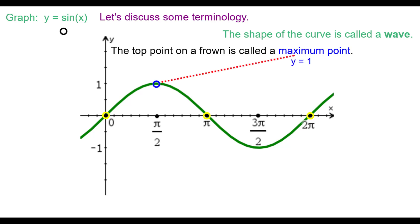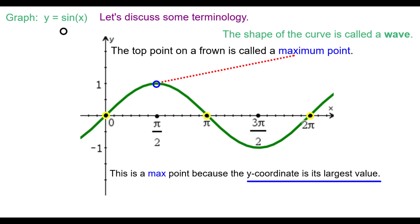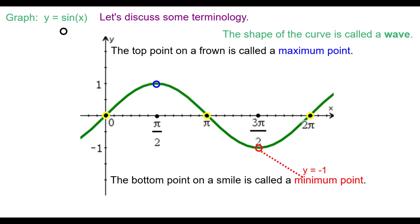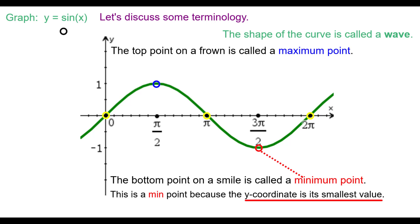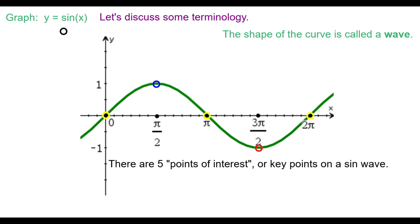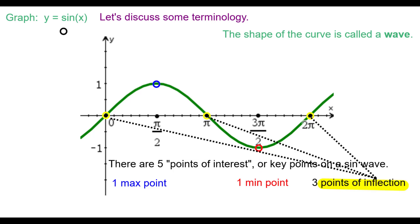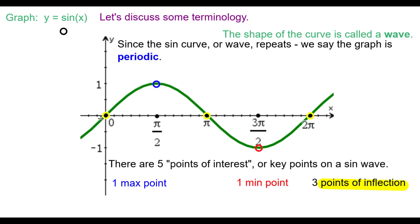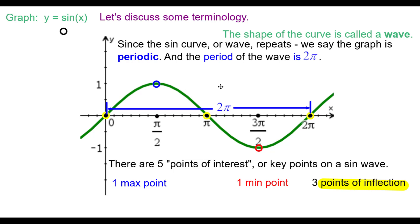The top point on a frown is called a maximum point, because the y-coordinate is at its largest value. The bottom point on a smile is called a minimum point, because the y-coordinate is at its smallest value. There are five key points of interest on a sine wave: one maximum, one minimum, and three inflection points. Since the sine curve repeats, the graph is periodic, with a period of 2π.